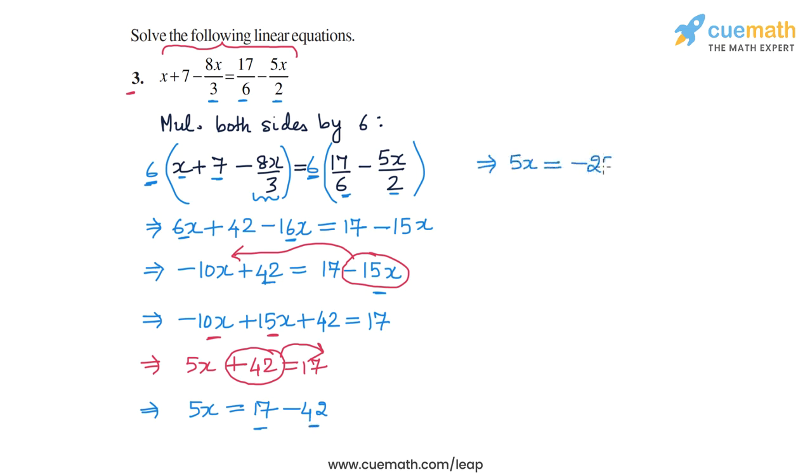Finally we need to get rid of this 5. We can divide both sides of the equation by 5, so we will get x is equal to minus 25 divided by 5, and this is equal to minus 5. So our solution is x is equal to minus 5.